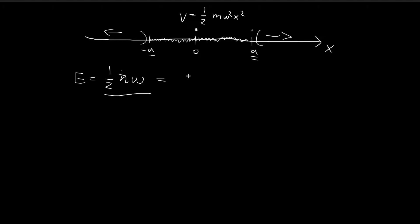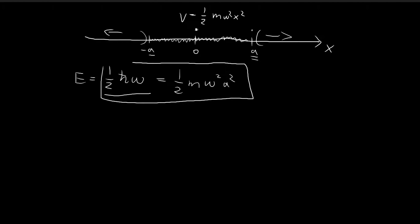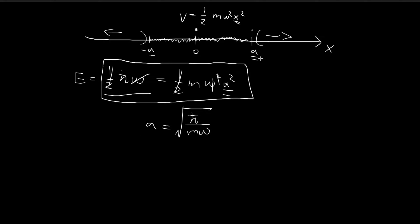All we have to do is equate the total energy to the potential formula — this is the case when all the energy is converted into potential energy and there is no more kinetic energy. So x is equal to a at that point. Substituting x equal to a into the potential formula and canceling constants, I get a equal to the square root of h-bar divided by m omega.